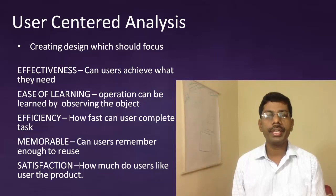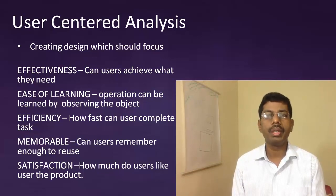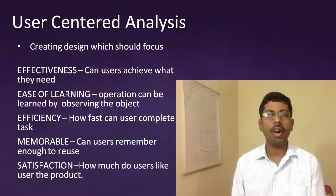Key usability dimensions include: efficiency — how fast can users complete a task; memorability — can users remember enough to reuse the product; and satisfaction — how much do users like using the product.